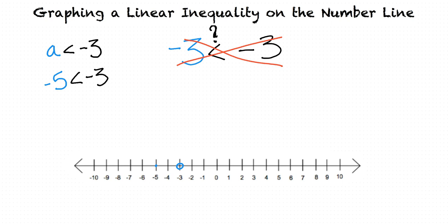We use a filled in circle when the variable can equal that value, and an empty circle if it can only take values near that point, but can't actually equal it.